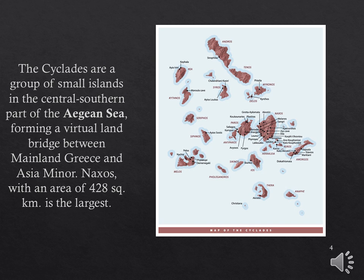We're going to begin in the Cyclades, which is a small group of islands in the central southern part of the Aegean Sea. It formed a virtual land bridge between mainland Greece and Asia Minor. The largest island in the group was Naxos. In the Cycladic I phase, information from this period comes almost exclusively from cemeteries. Settlements remain scarce, and this could just be because they were using perishable materials like wood to build their settlements, so it just didn't last for us to discover it.